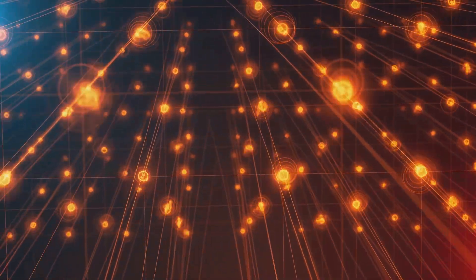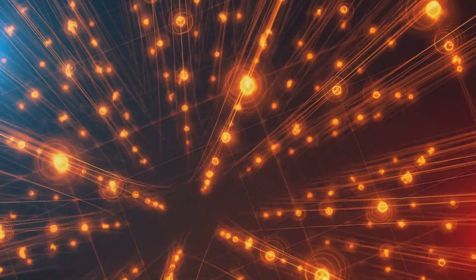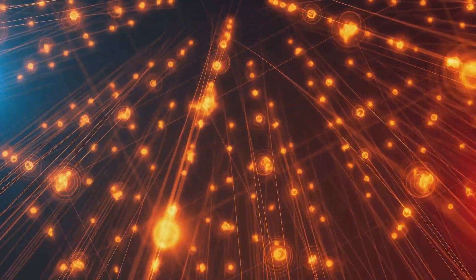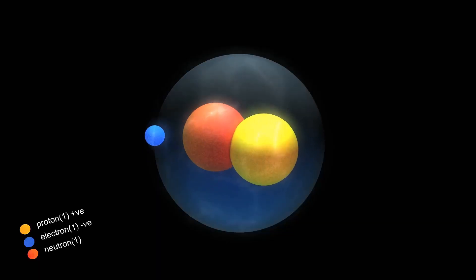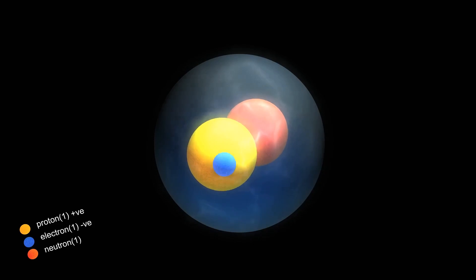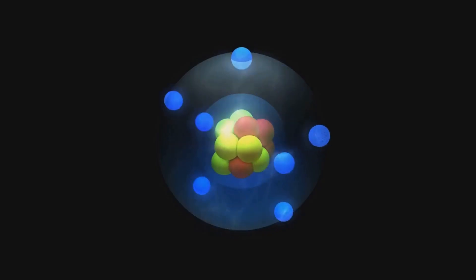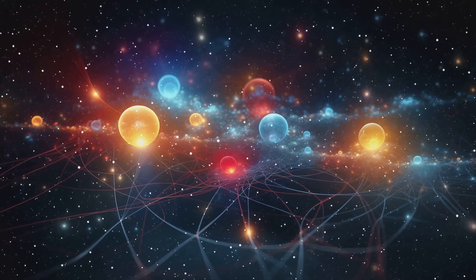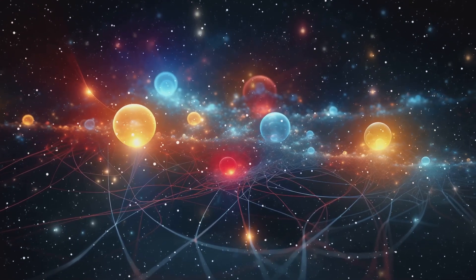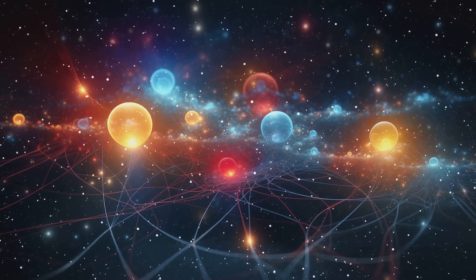One of the reasons neutrinos are so fascinating is that they come in three types, or flavors, each with its own properties. But here's the twist. Neutrinos have the bizarre ability to change from one type to another as they travel. Imagine throwing a ball labeled electron neutrino, only for it to arrive as a completely different particle, a muon or a tau neutrino. This phenomenon is called neutrino oscillation, and it's one of the strangest things about them.